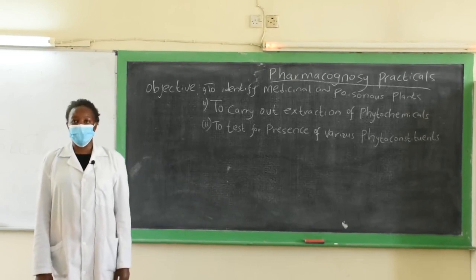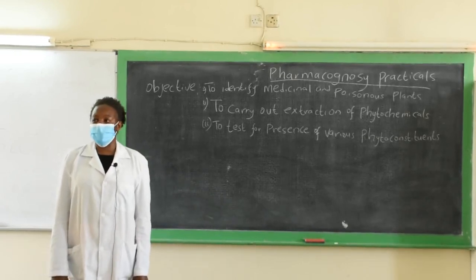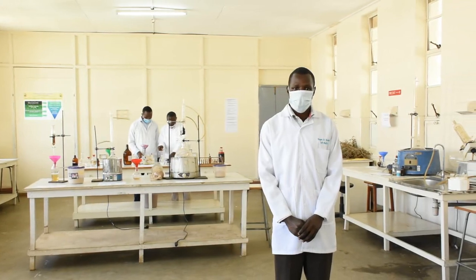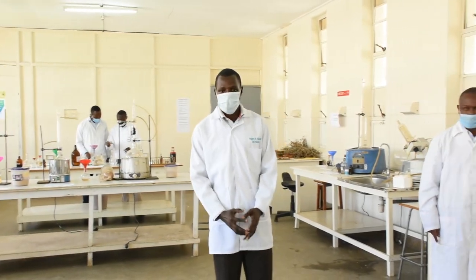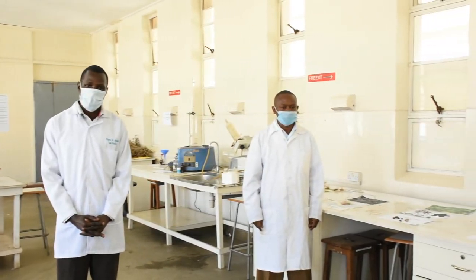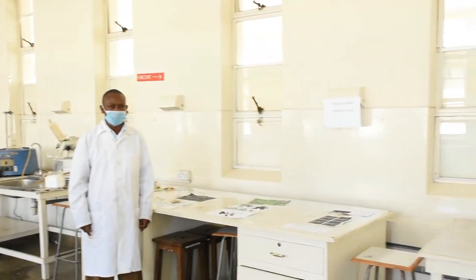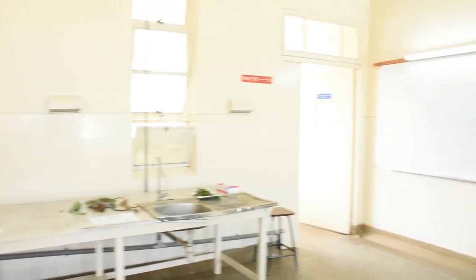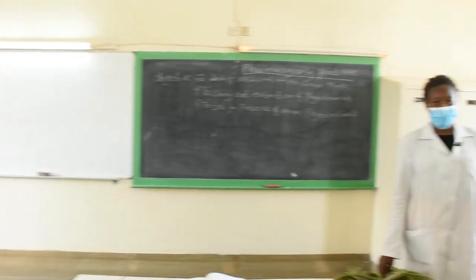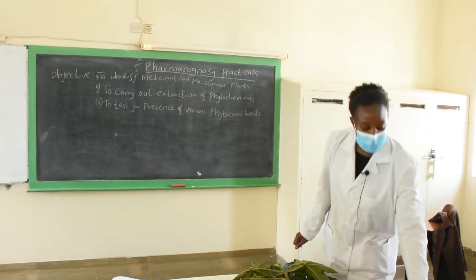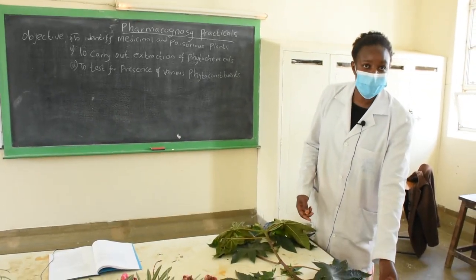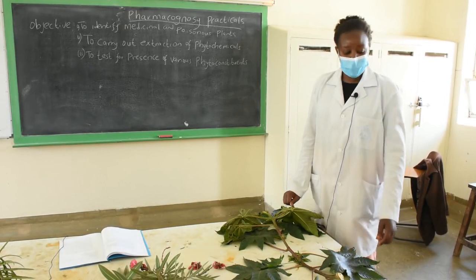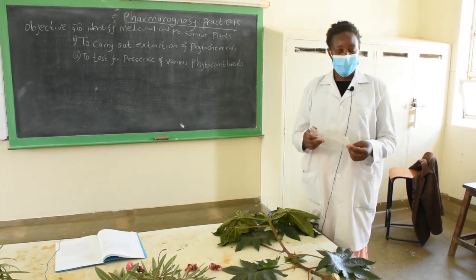I'm going to take you through the first practical: the identification of medicinal plants. Here we are looking at various plants that are sources of medicines or have poisonous constituents. Our first plant is Ricinus communis, commonly known as the castor oil plant. From its seeds we normally get a fixed oil very useful for making ophthalmic preparations and for constipation.